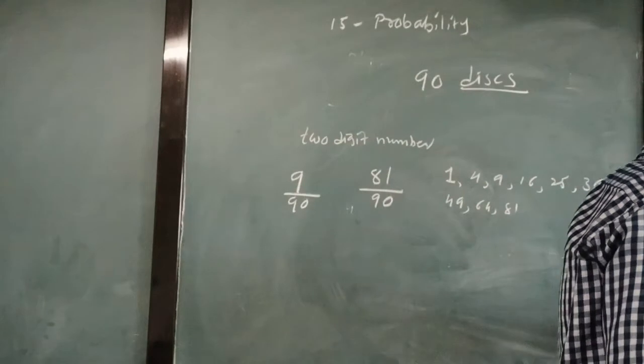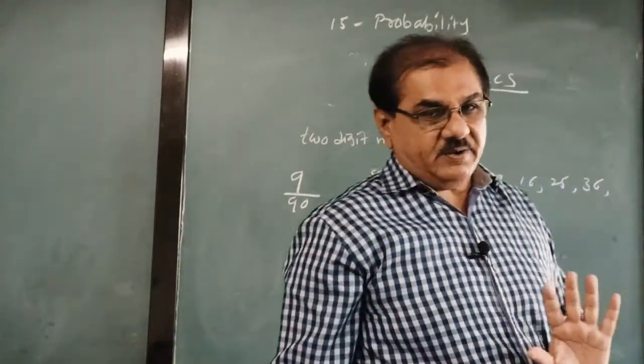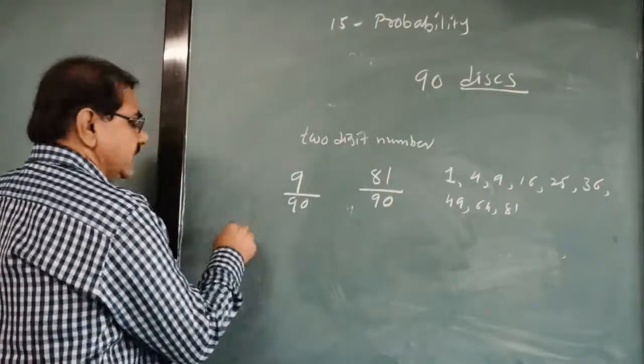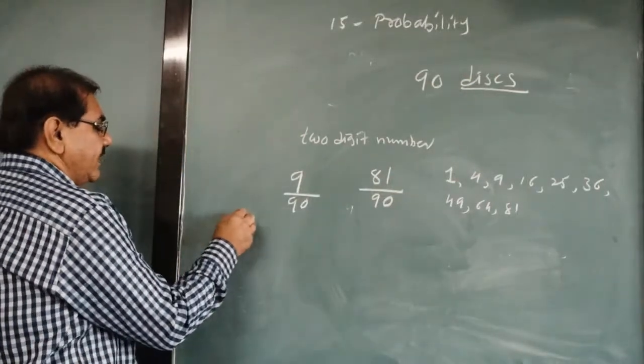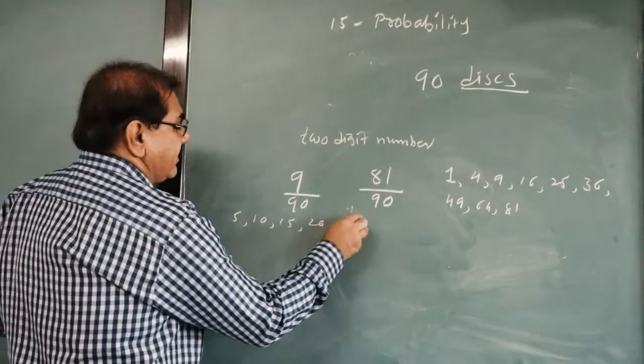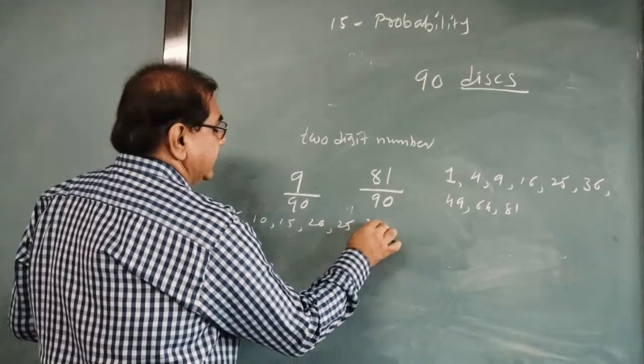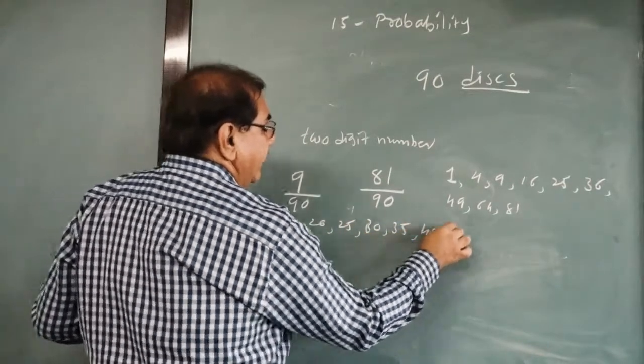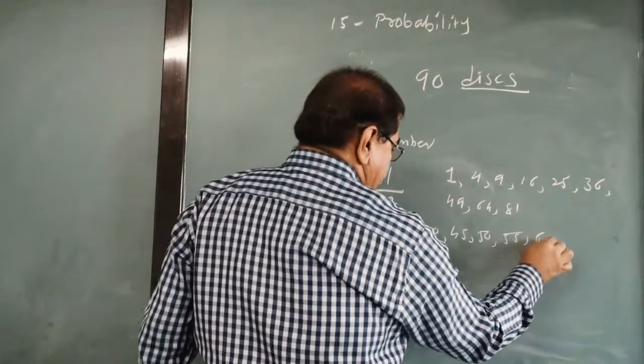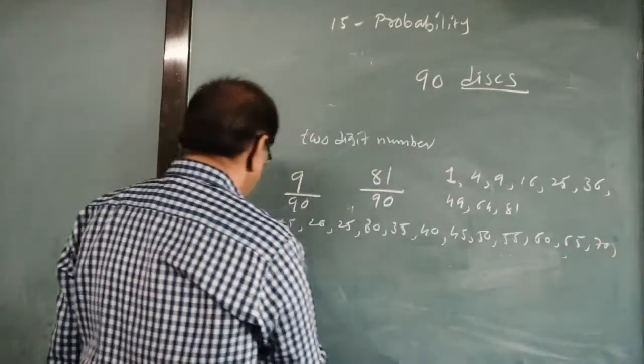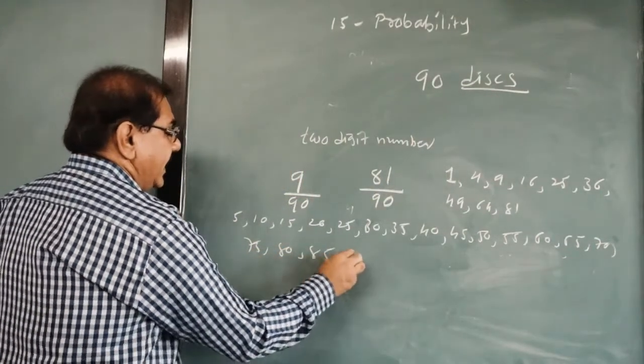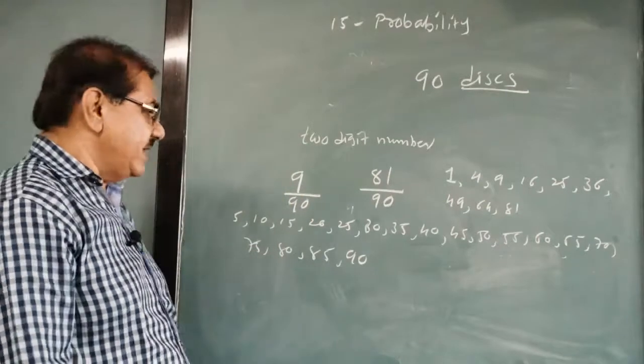And a number divisible by 5. Out of 1 to 90, how many numbers are divisible by 5? Say 5 ones are 5, 5 twos are 10, 5 threes are 15, 5 fours are 20, 5 fives are 25, 5 sixes are 30, 35, 40, 45, 50, 55, 60, 65, 70, 75, 80, 85 and 90. These all are the numbers which are divisible by 5.